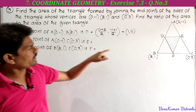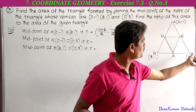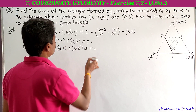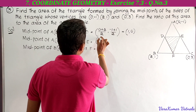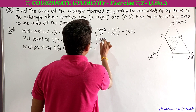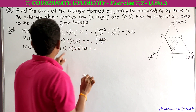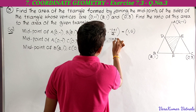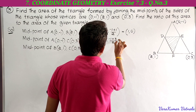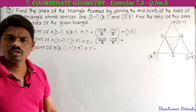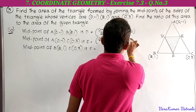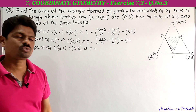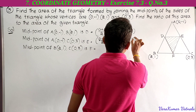The midpoint E of AC, where A is (0, -1) and C is (0, 3): x-coordinate is (0 + 0)/2 = 0, and y-coordinate is (-1 + 3)/2 = 2/2 = 1. So E is (0, 1).